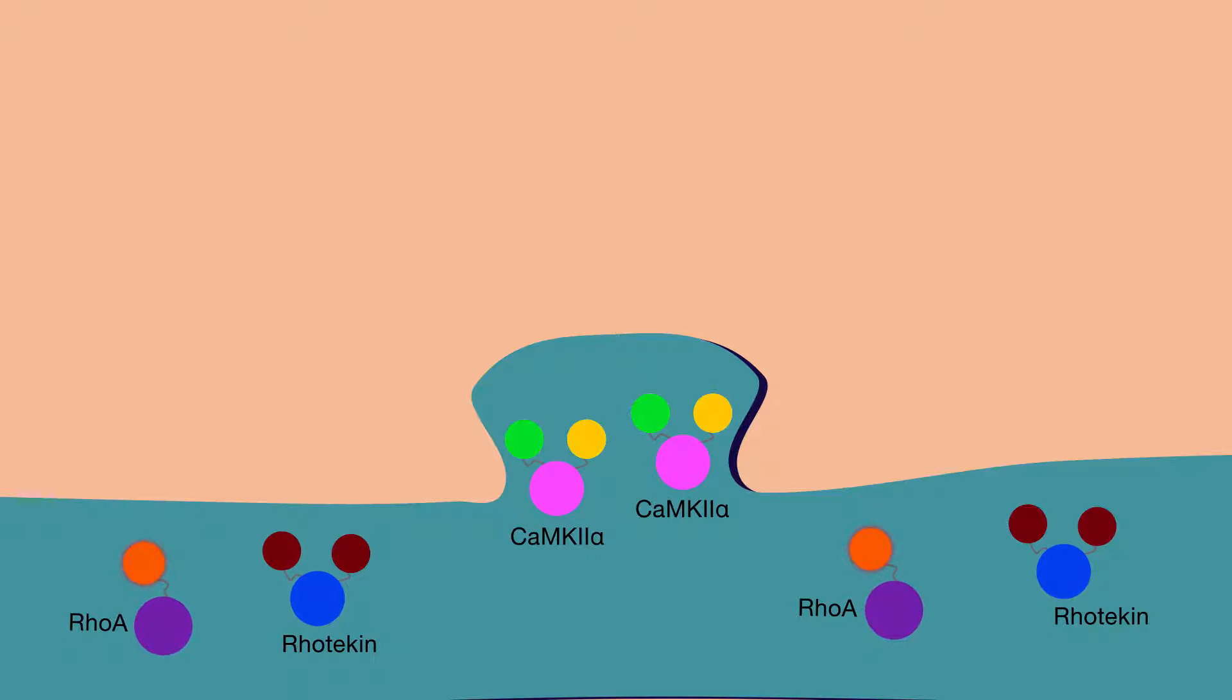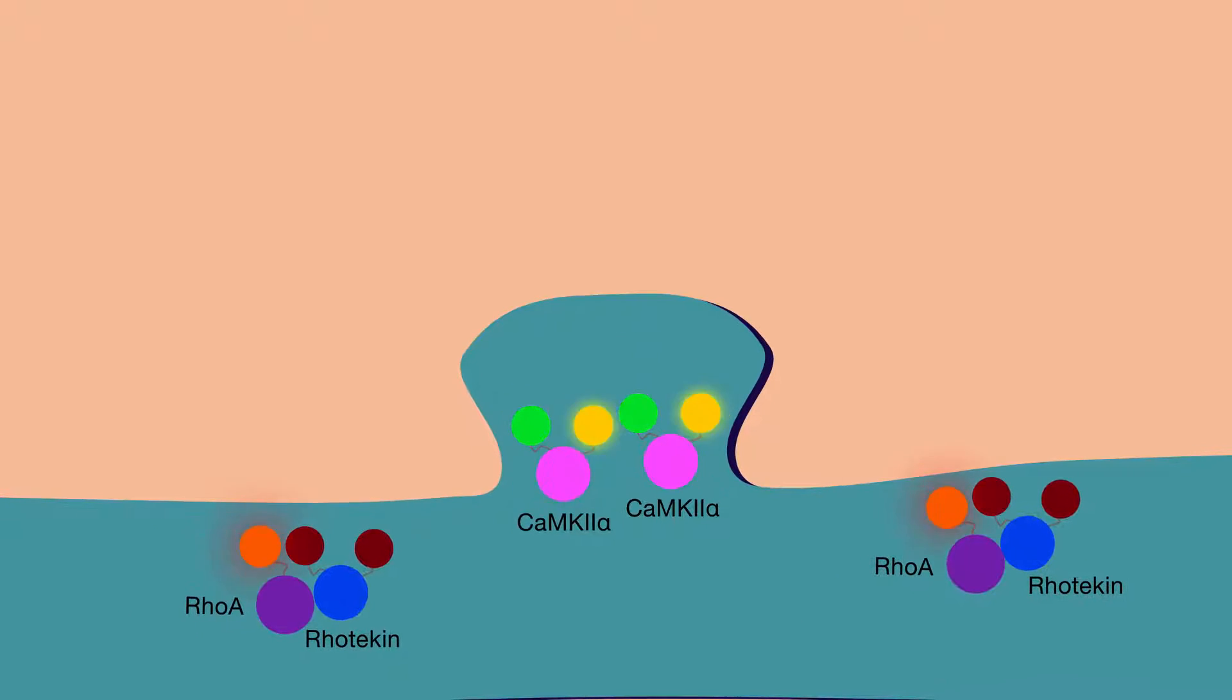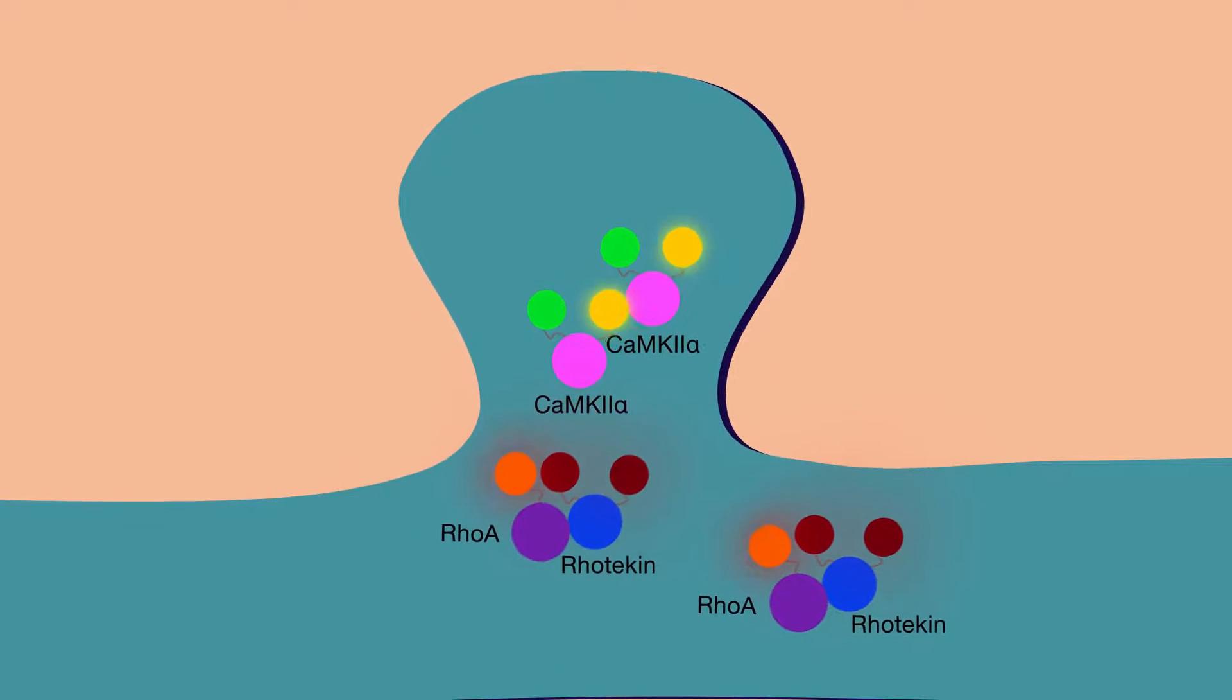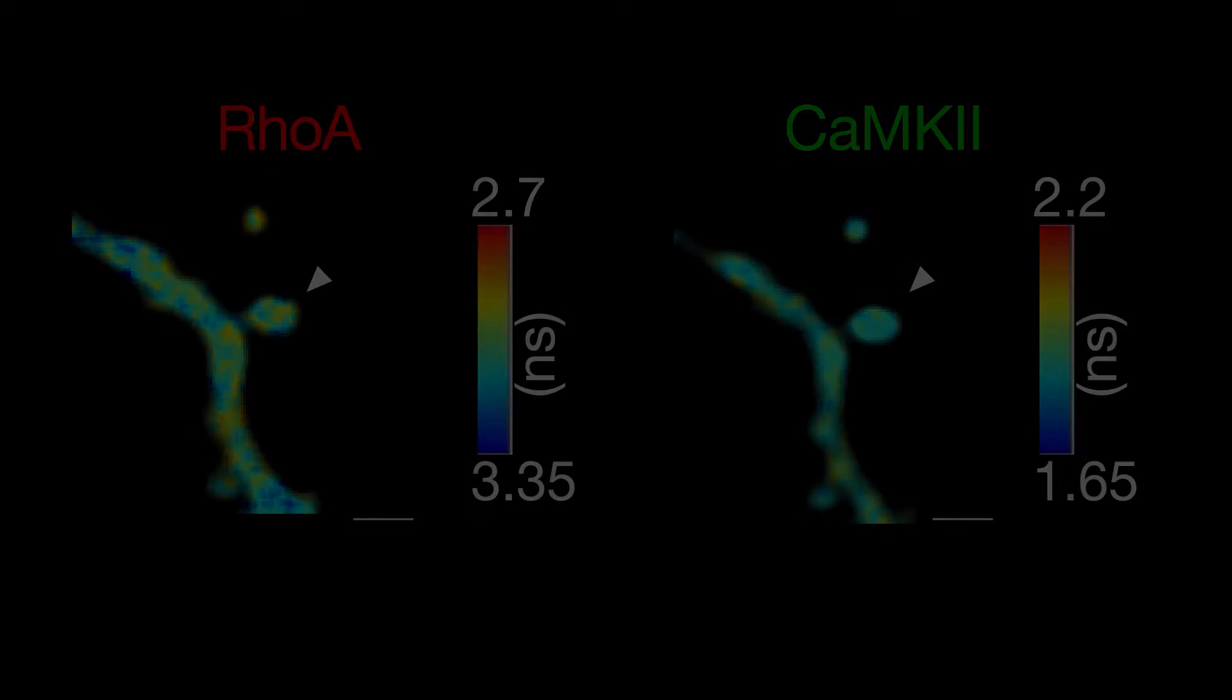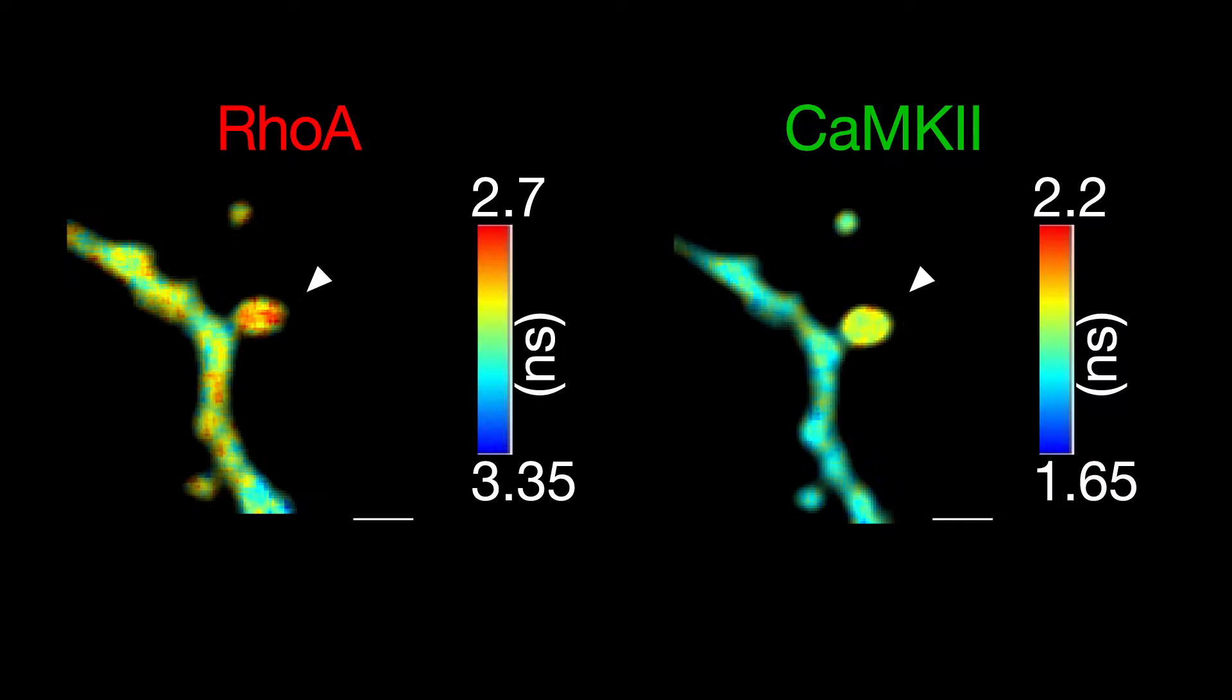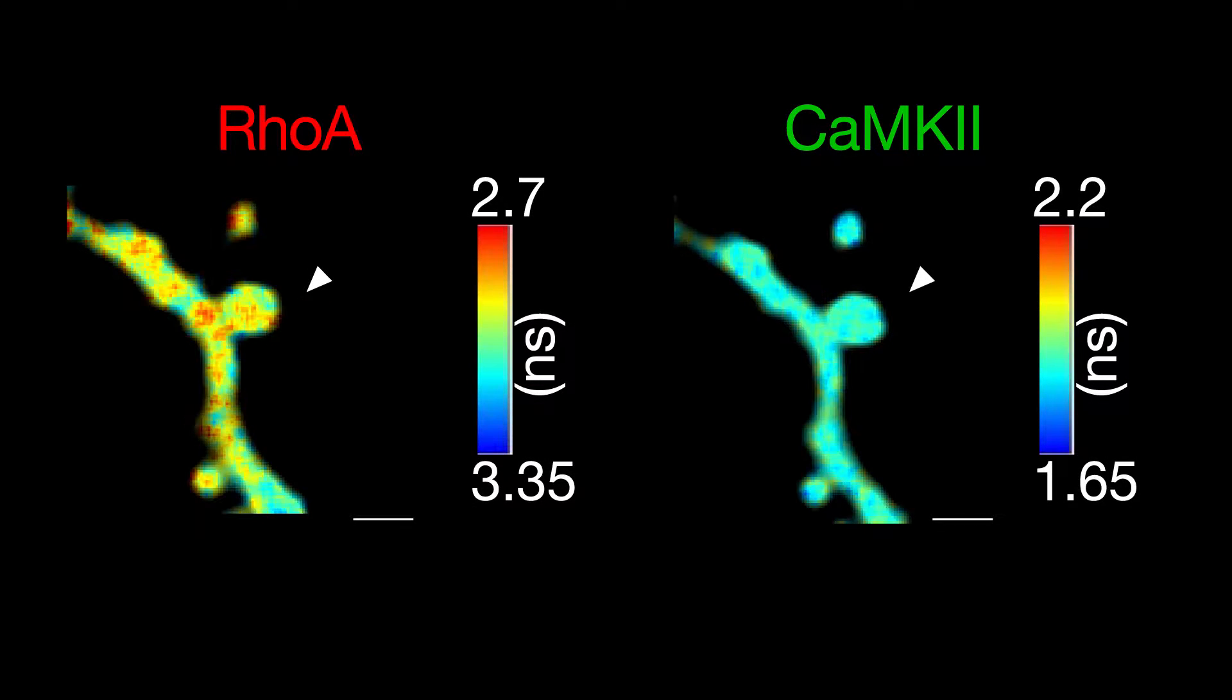Then, using a specialized imaging technique, they triggered structural plasticity in specific dendritic spines. This allowed the researchers to track, for the first time, two signaling molecules simultaneously in individual spines undergoing structural plasticity.